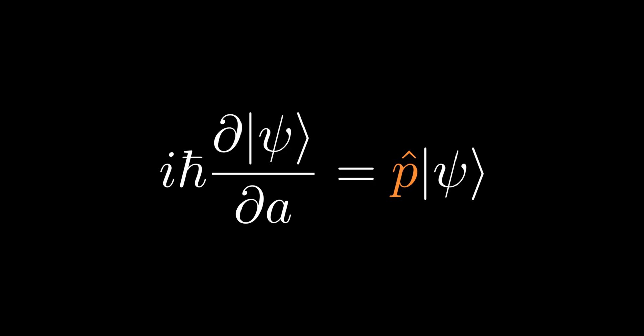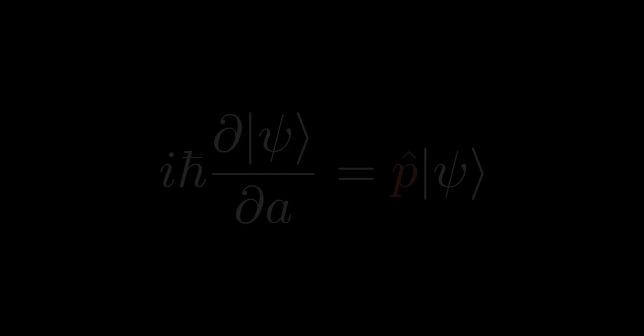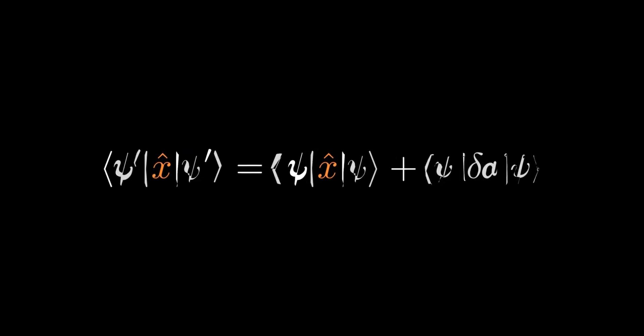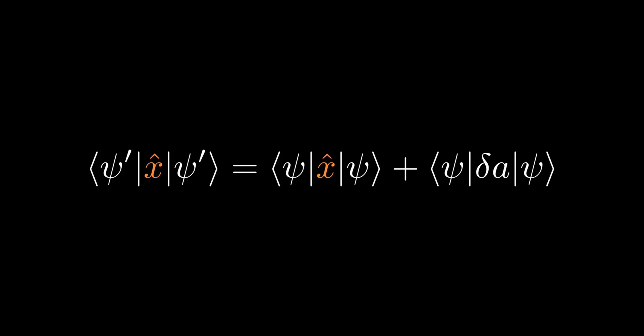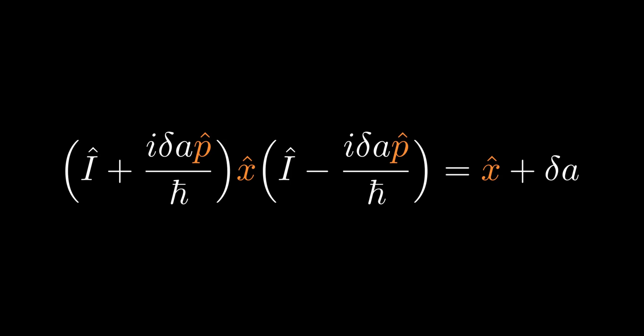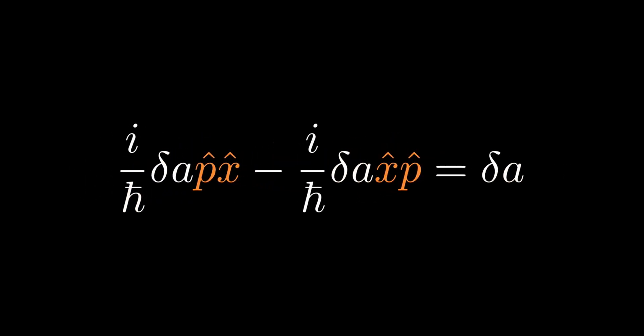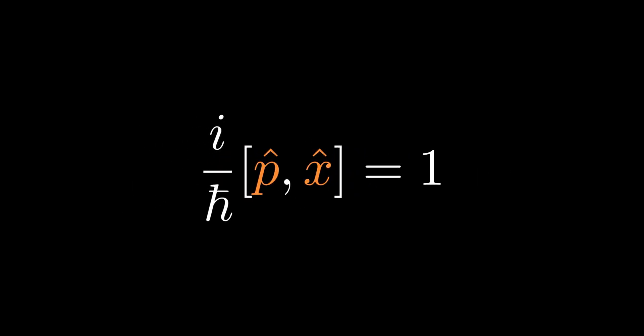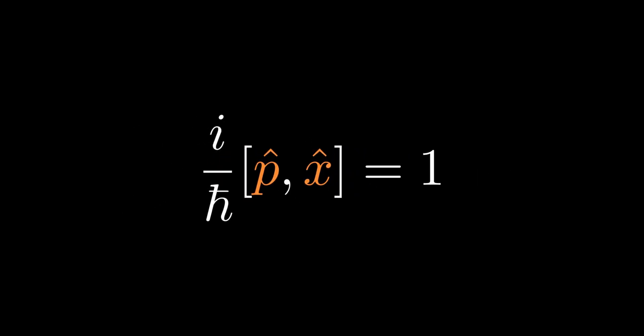We shall now begin to derive the canonical commutation relation. After the system has been displaced by some small distance delta-A, the expectation value of the new position is the original expectation value plus the small distance. After some algebraic manipulation, we obtain an equation on the screen. Equating the terms that are first order in delta-A yields another equation. Cancelling delta-A on both sides and using the definition of the commutator yields i over h-bar times the commutator of p and x equals 1.